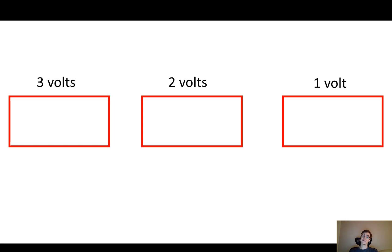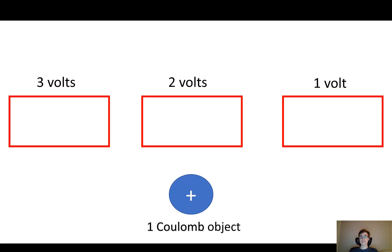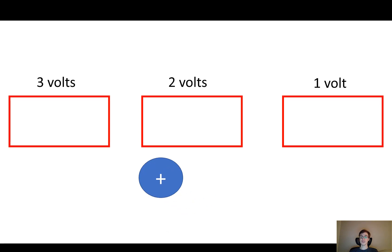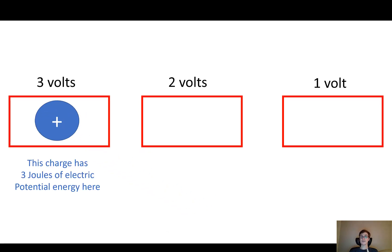For example, let's say that this is the entire universe — it's blank and it's boring. But I take three different parts of the universe and I measure the voltages in those parts. The first part has three volts, the second part has two volts, and the last part has one volt. This means that if I take one Coulomb of charge and I put it into the three volt area, that one Coulomb is going to have three joules of electrical potential energy.